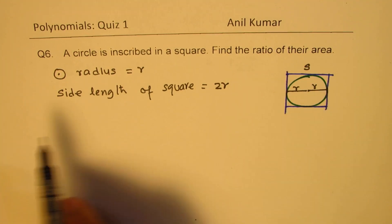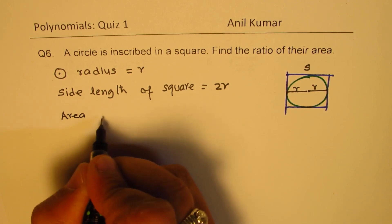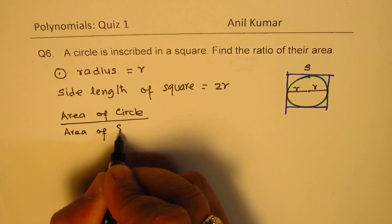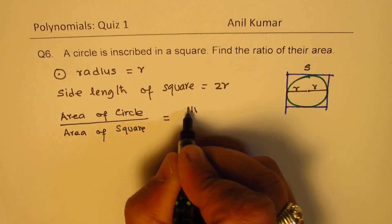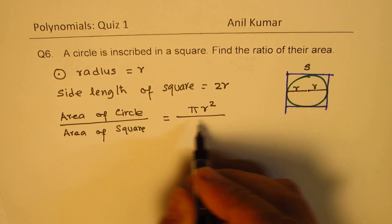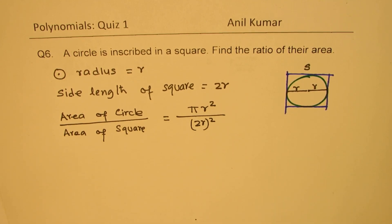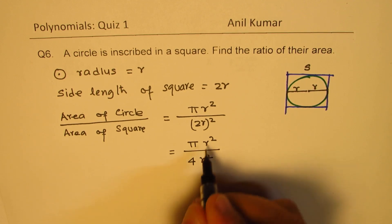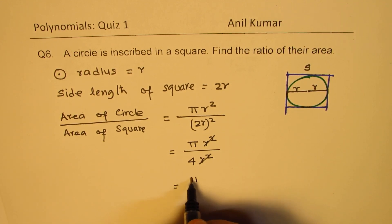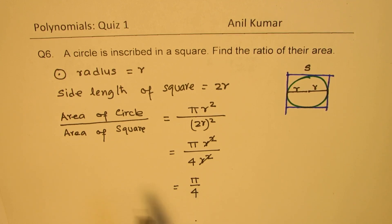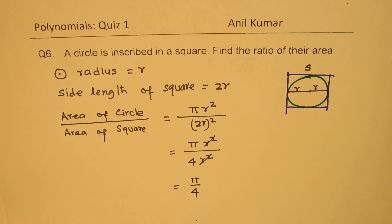We need to find the ratio of their areas. Area of circle over area of square: area of circle is πr² and area of square is (2r)², which gives 4r². So the ratio is πr² / 4r². The r² terms cancel, giving π/4. So the ratio of area of circle to area of square is π/4, or if written the other way, 4/π.